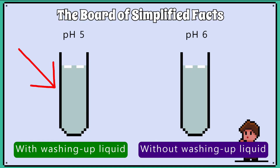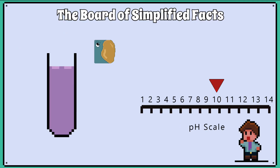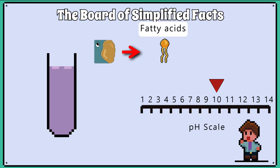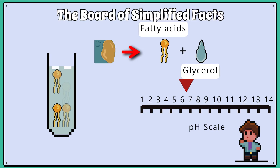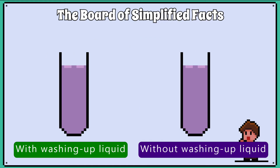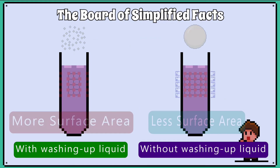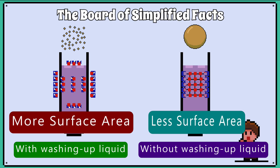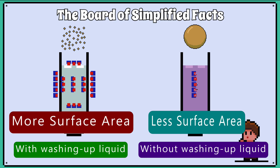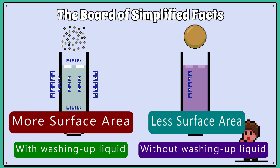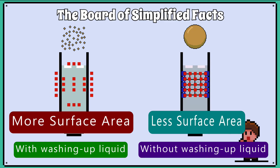The test tube with washing up liquid goes colourless first, followed by the second test tube without washing up liquid. The reason we see a colour change at all is because lipase is breaking down the fats into fatty acids and glycerol. The fatty acids produced make the solution more acidic. The test tube with washing up liquid changes colour first because the washing up liquid has emulsified the large fat droplets into smaller fat droplets, which increases the available surface area for lipase action.